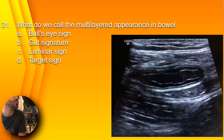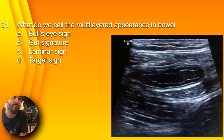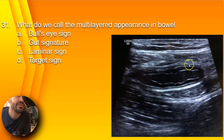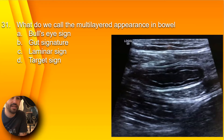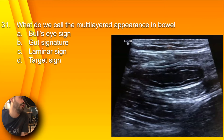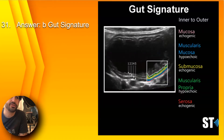Question 31: What do we call the multi-layered appearance in bowel? Here we have a picture of an appendix, a nice blind-ending structure. You can see all these layers from hyperechoic to hypoechoic — hyper, hypo, and hyperechoic. There are five layers. So what do we call this multi-layered appearance in bowel? Is it A, bullseye sign; B, gut signature; C, laminar sign; or D, target sign? The answer is B, gut signature.